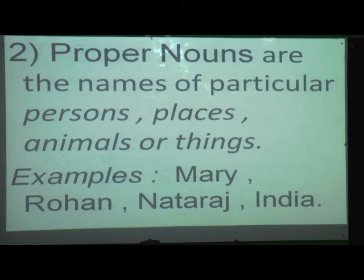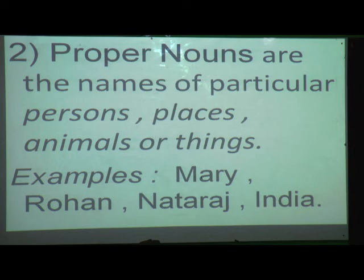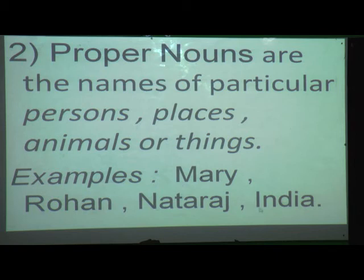For example, the name of a girl is specifically mentioned as Mary. So Mary is a proper noun. Then Rohan, Natraj - which is the name of a pencil - and India, the name of a country. One important thing: for proper nouns, you always begin with a capital letter. M, R, N, I - whenever you write a proper noun, begin with a capital letter.